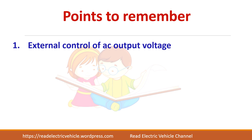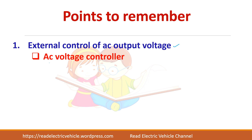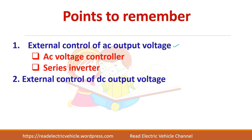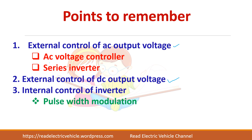To summarize, you can control the output voltage of the inverter by three different methods: external control of AC voltage — using an AC voltage controller or series inverter; external control of DC voltage; and internal control of the inverter using pulse width modulation. The PWM method is said to be the most efficient because you don't need any extra components for this.